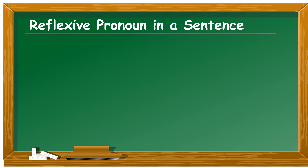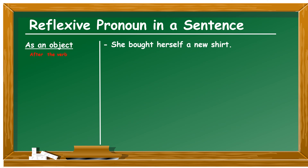Reflexive pronouns can come in different places in a sentence depending on their purpose. If you use a reflexive pronoun as an object, it comes right after the verb. For instance, 'she bought herself a new shirt' — the reflexive pronoun is used as an object and comes right after the verb. Another example: 'take care of yourself' — again, the reflexive pronoun is used as an object after the verb. We can also use reflexive pronouns to emphasize the subject or object.